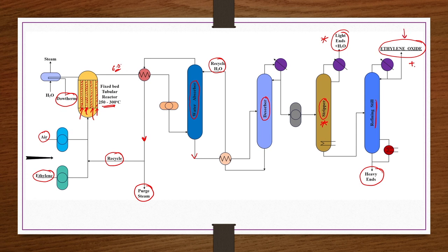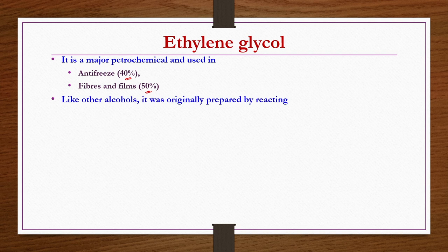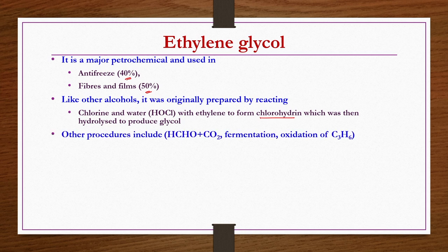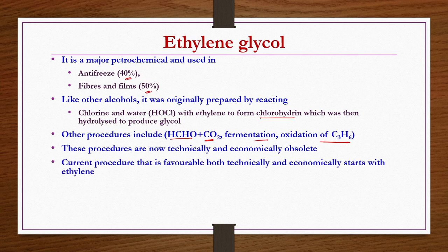Ethylene glycol is a major petrochemical used in antifreeze and fiber/film production — up to 40 and 50 percent respectively. Originally it was prepared by reacting chlorine and water with ethylene to form chlorohydrin, which was hydrolyzed to produce glycol. Other procedures included formaldehyde reacting with CO2, or fermentation and oxidation of propene. These procedures are now technically and economically obsolete because hydration of ethylene oxide is more favorable.